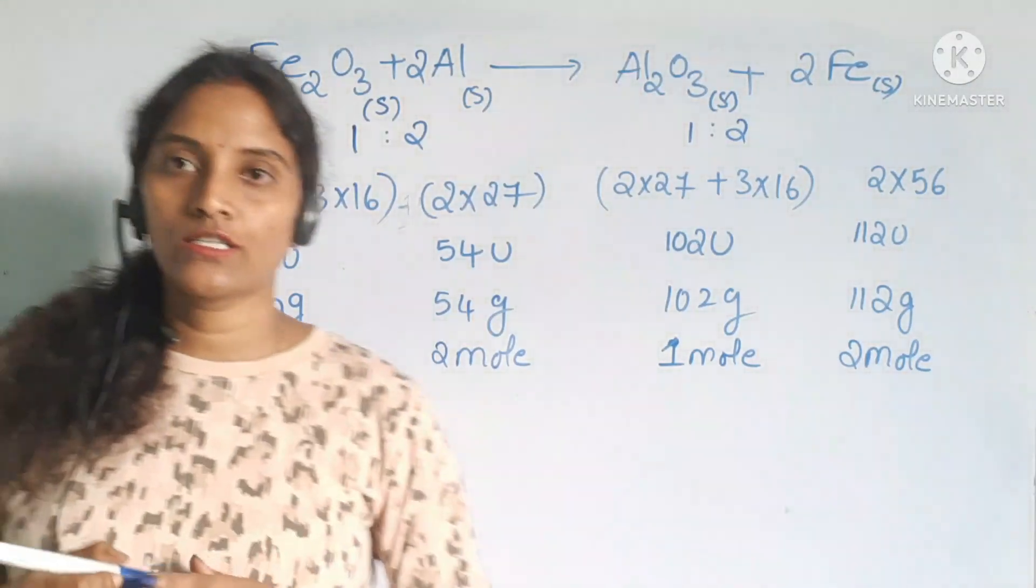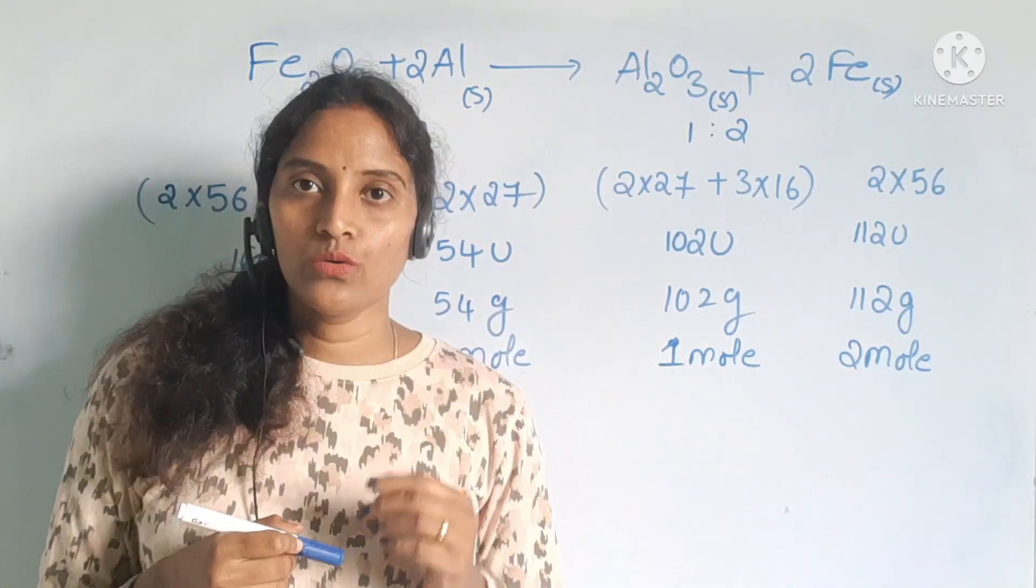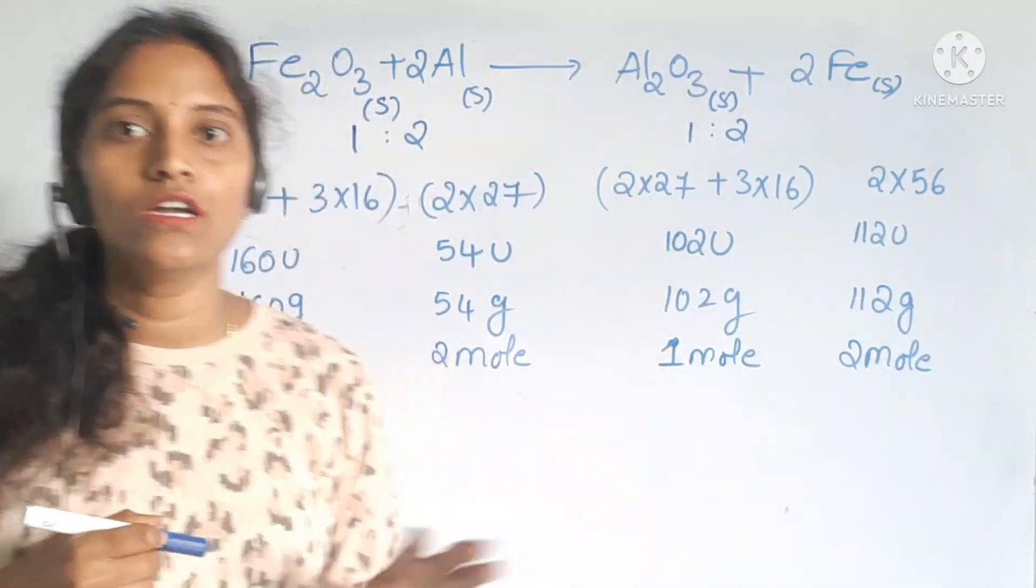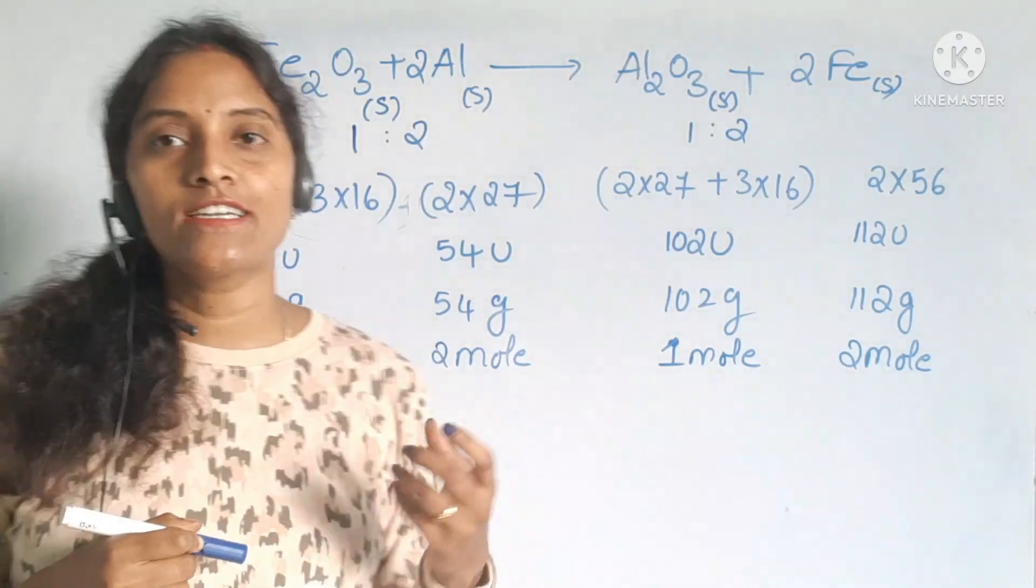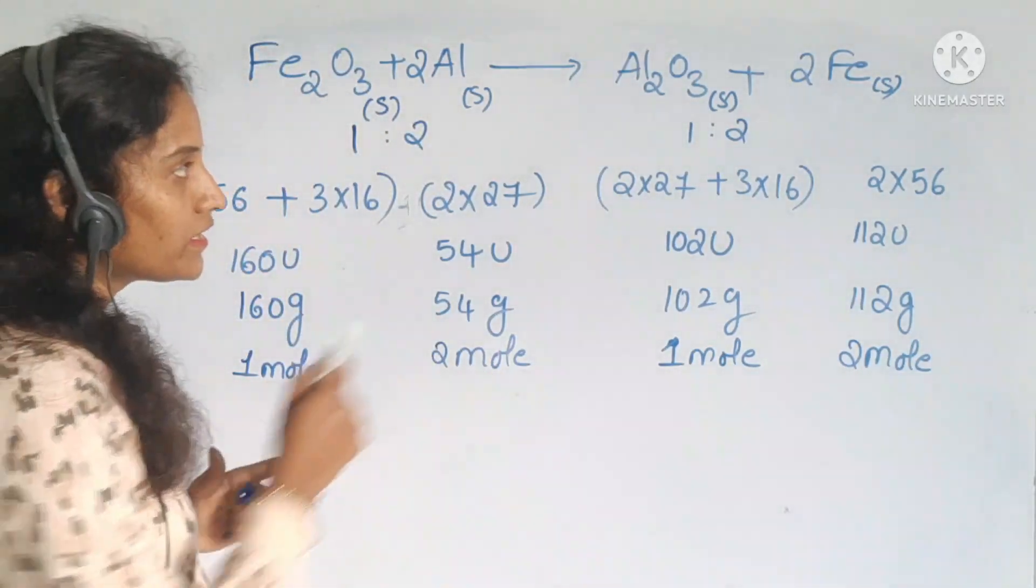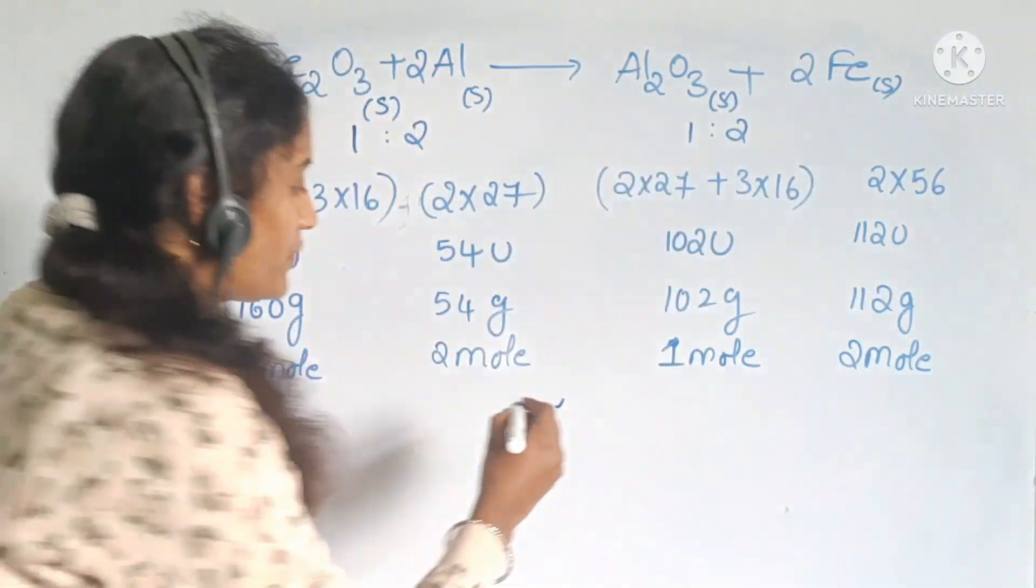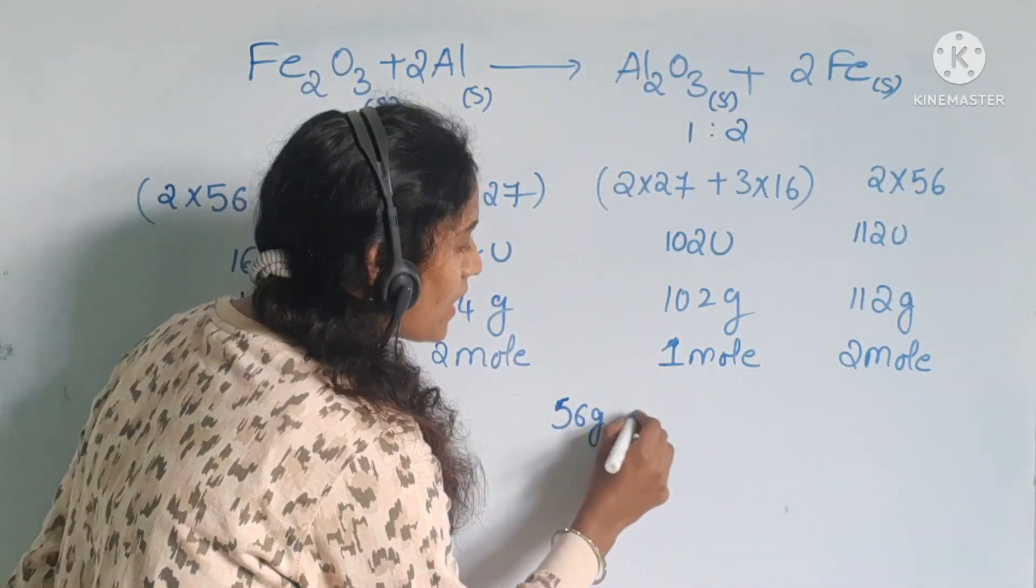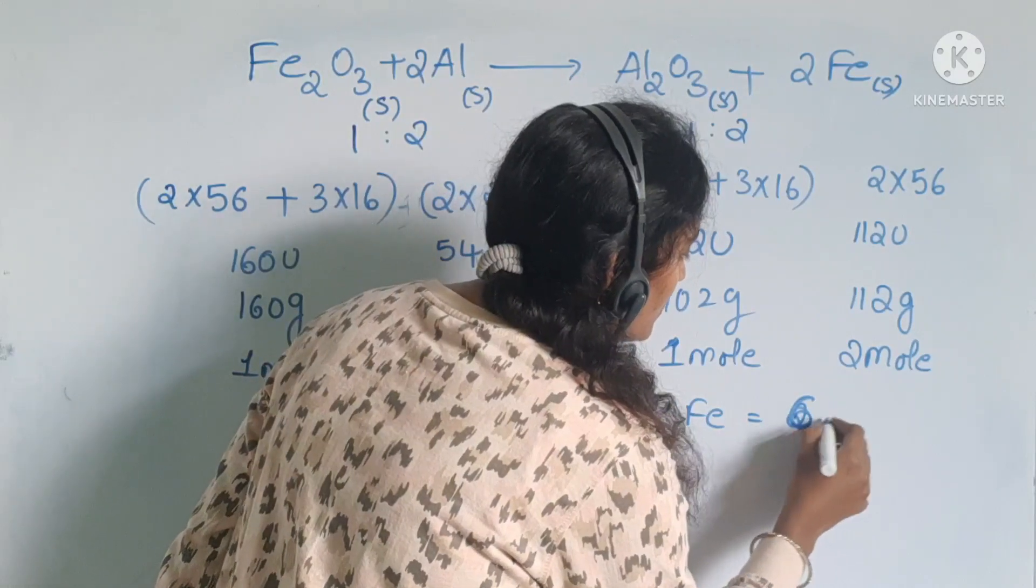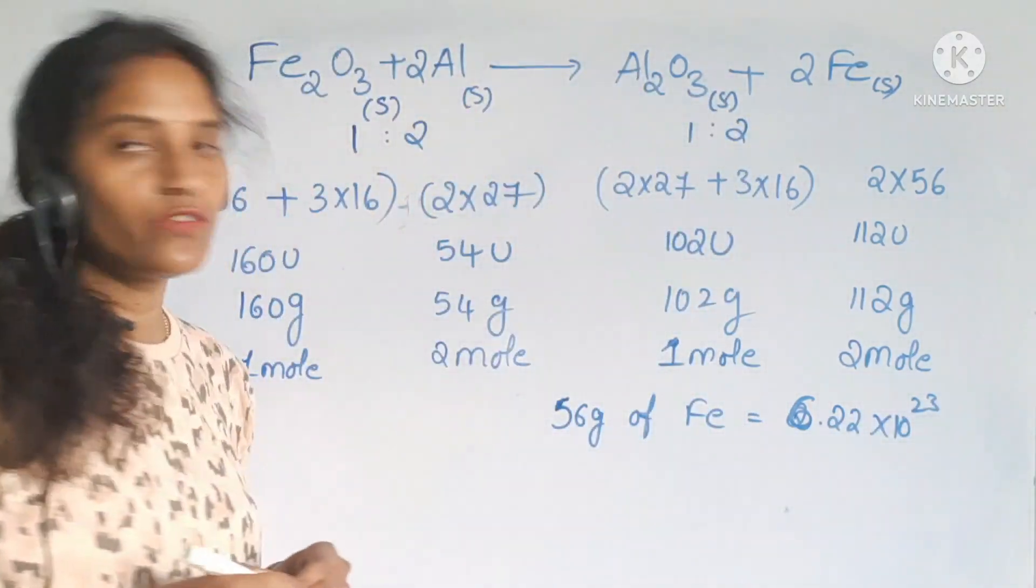And the next thing is the fifth point. Here, by using molar masses and Avogadro's number, we can calculate the number of particles present in a substance. For that one, you can take 1 atom of iron equal to 56 grams. 56 grams of iron equal to 6.022 into 10 power 23 number of particles.